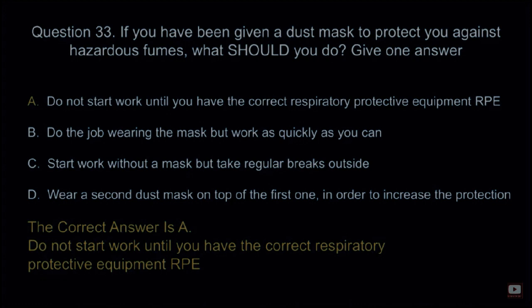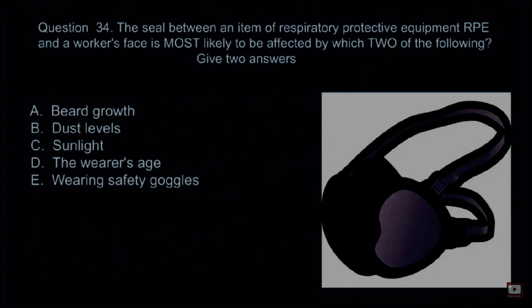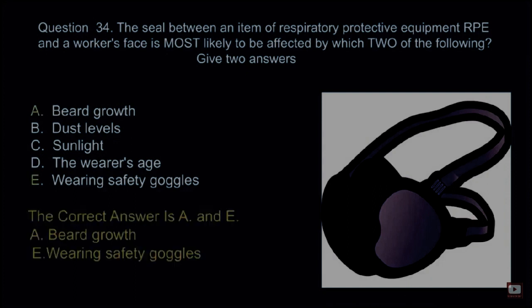Question 34: The seal between an item of respiratory protective equipment (RPE) and a worker's face is most likely to be affected by which two of the following? Give two answers. A: Beard growth. B: Dust levels. C: Sunlight. D: The wearer's age. E: Wearing safety goggles. The correct answers are A and E — beard growth and wearing safety goggles.